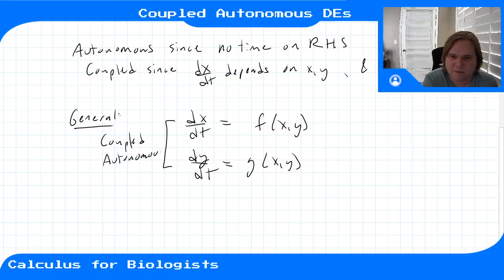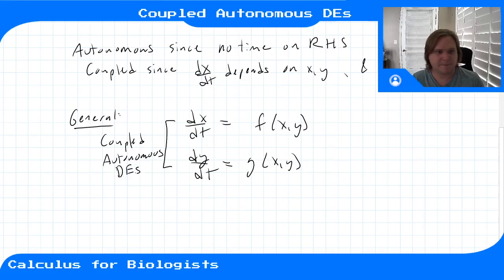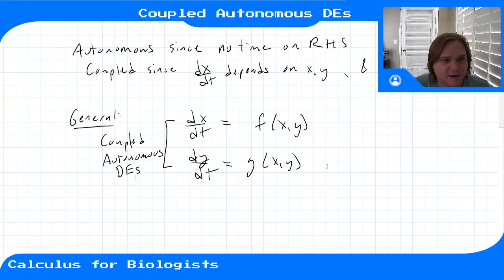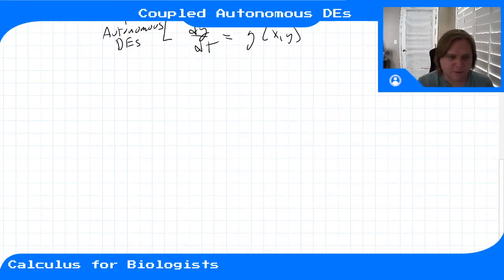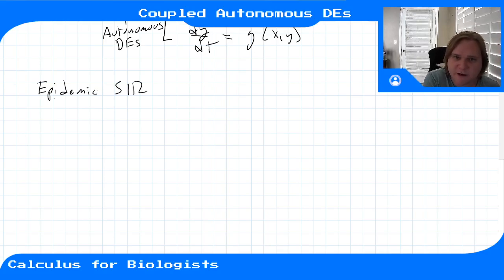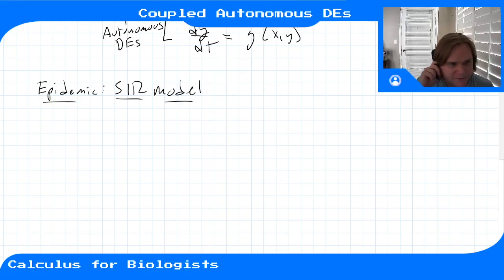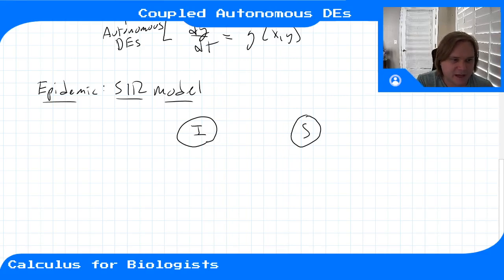This is a coupled autonomous system of differential equations, and these can come from pretty much anywhere in biology. For example, consider an epidemic model — the SIR model, which we touched on briefly in a problem-solving session — where you have a population of infected individuals I and a population of susceptible individuals S.